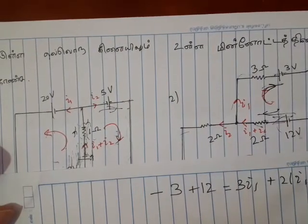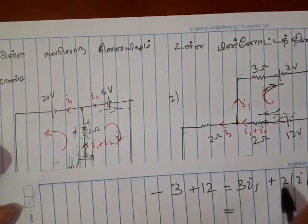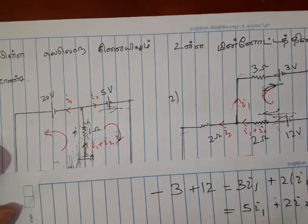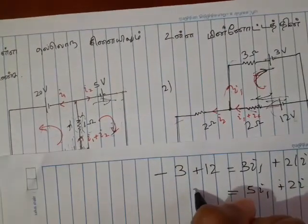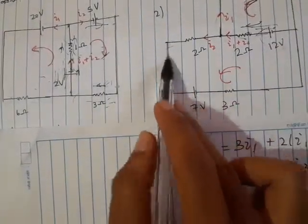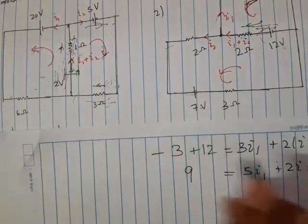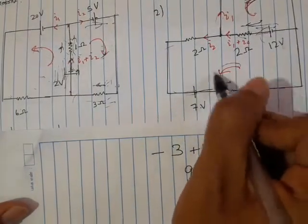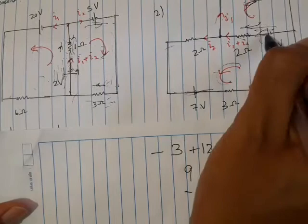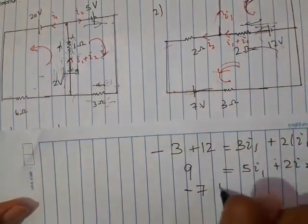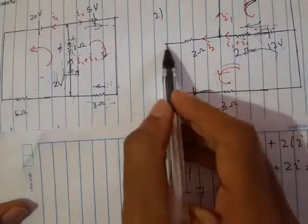Two I1 plus I2. I'm going to do this here: 5I1 plus 2I2. Plus 10. So it's going to be here.